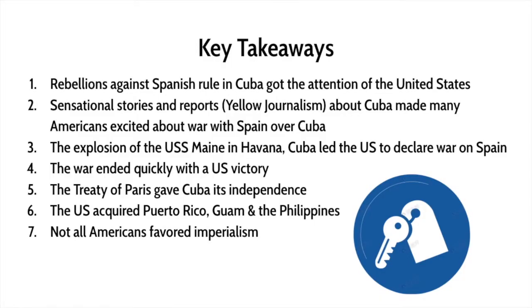Some key takeaways from this lesson on the Spanish-American War: rebellions against Spanish rule in Cuba got the attention of the United States; sensational stories called yellow journalism about Cuba made many Americans excited about war with Spain and influenced the actions of the government; the explosion of the USS Maine in Havana, Cuba led the U.S. to declare war on Spain; the war ended quickly with a U.S. victory; the Treaty of Paris gave Cuba its independence while the U.S. acquired Puerto Rico, Guam, and the Philippines; and not all Americans favored imperialism — there was still a debate about the actions America was taking.